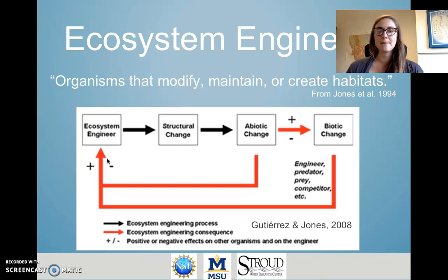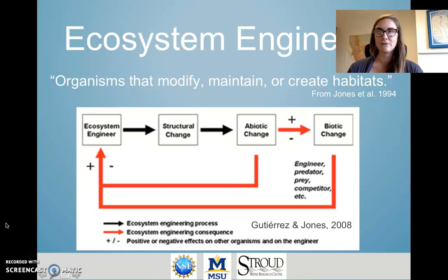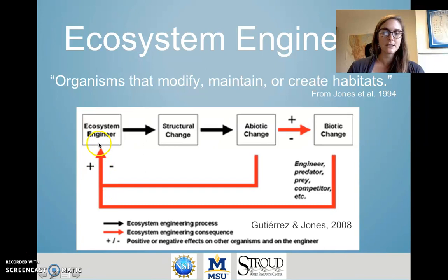Ecosystem engineers are organisms that modify, maintain, or create habitats. The diagram on this slide shows the relationship between an ecosystem engineer and the subsequent changes it causes in the environment. Starting with the engineer on the left, it causes a structural change in the physical habitat that leads to an altered abiotic or non-living state, which then leads to either a positive or negative influence on the biology or the species living in the ecosystem. That biotic change then feeds back to influence the ecosystem engineer itself, through mechanisms such as predation and competition.